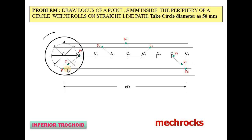Now join all these points. Join all these points. Like this, you can draw the inferior trochoid.